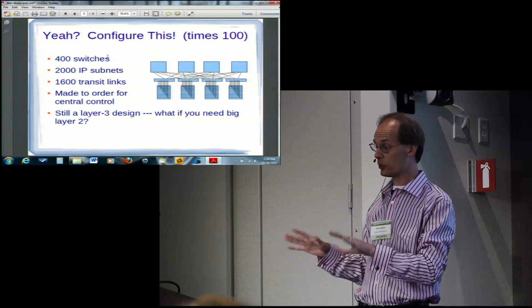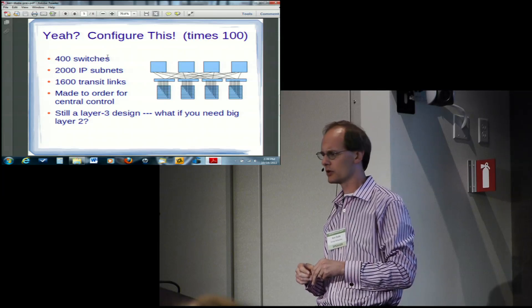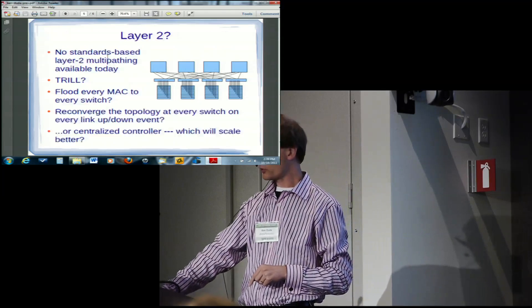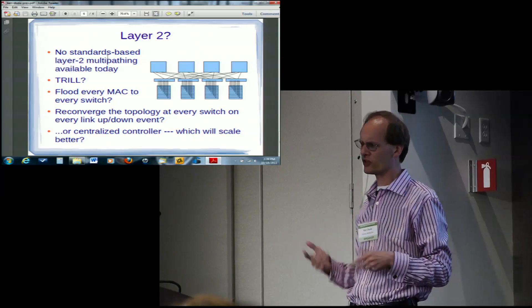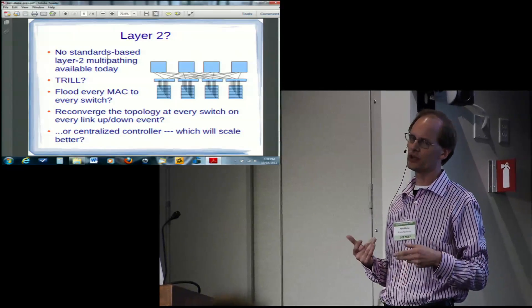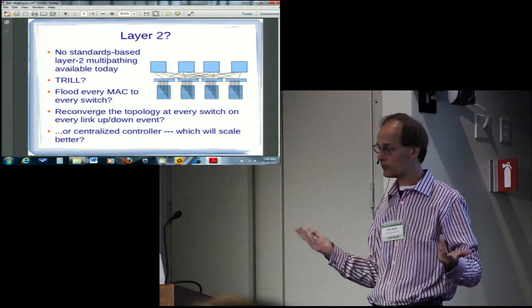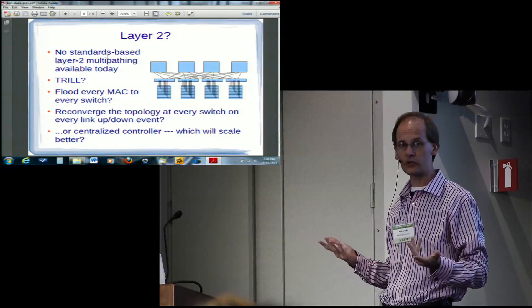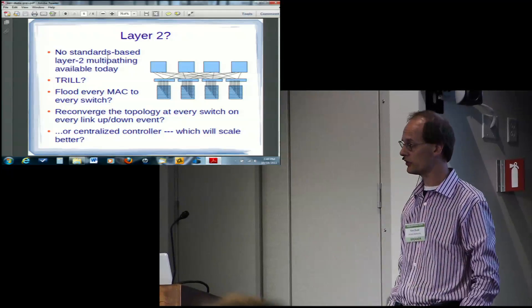And this scenario is doable with today's switches, but what if you need a layer 2 design? If you try to imagine what this looks like at layer 2, what you'll see is that there's really kind of no good way to do it, that there's no standards-based layer 2 multi-pathing approach available today. Trill is coming at some point, yet another way of routing, another dynamic discovery protocol for, again, something which is fundamentally already known, at least to the network administrators.